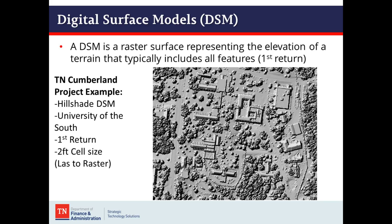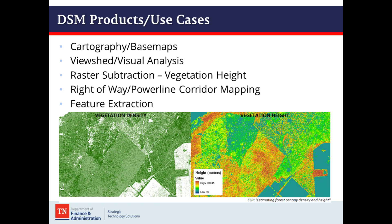The next product is a digital surface model — a raster surface representing the elevation of terrain that typically includes all features, which in the case of LiDAR data means the first return. This was generated using the ArcMap LAS to raster geoprocessing tool using the first return, so you can see vegetation, buildings, and power lines. Use cases include cartography, base maps, viewshed and visual analysis, raster subtraction — taking the DSM and subtracting that height from the ground to get vegetation height, building height, or feature height — as well as right-of-way or power line corridor mapping and feature extraction.